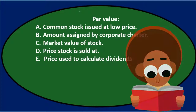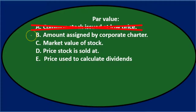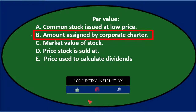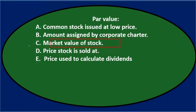We will go through this with the process of elimination. Par value — A) common stock issued at low price: that doesn't sound right, it's not common stock issued at a low price or value. B) amount assigned by corporate charter: that sounds kind of reasonable, possibly. C) market value of stock: maybe par value and market value are the same thing. D) price stock is sold at: again, maybe.